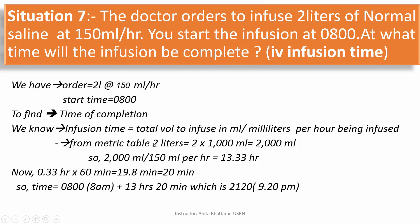From the metric table, 1 liter equals 1000 ml, so 2 liters equals 2000 ml. Total volume to infuse is 2000 ml divided by 150 ml per hour, giving 13.33 hours. The ml units cancel, leaving hours. So the given volume of 2000 ml will be completed in 13.33 hours if we infuse at 150 ml per hour.